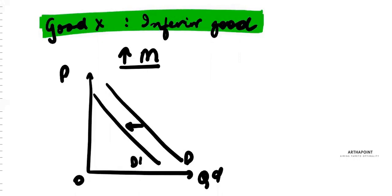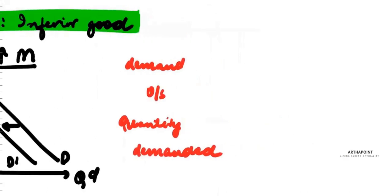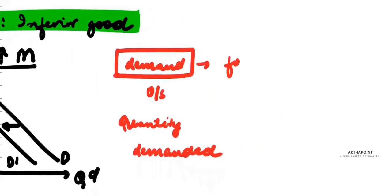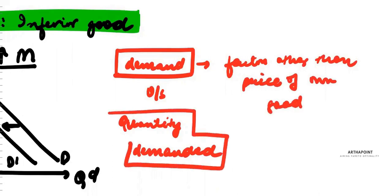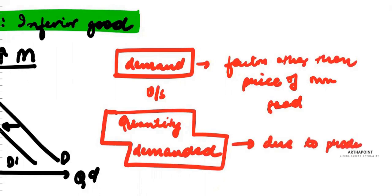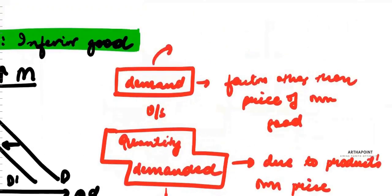Here is an important distinction between demand and quantity demanded. A change in demand is due to factors other than price — like income, taste and preferences, number of buyers, market conditions, etc. — and always leads to a shift of the demand curve. A change in quantity demanded is always due to the product's own price, and always leads to movement along the demand curve.